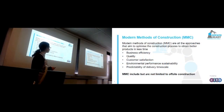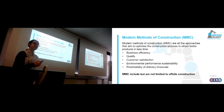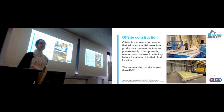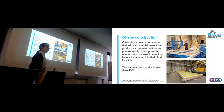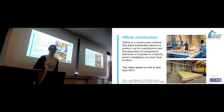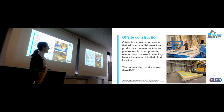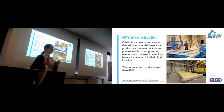Modern methods of construction are all about process improvements — their aim is to optimise the process. It's not a specific system or product; it doesn't matter what it is so long as it improves the construction process. Offsite construction is a bit more specific — offsite is really a way to achieve modern methods of construction, a way to achieve efficiency. Offsite construction is a method that adds substantial value to a product via the manufacturing and pre-assembly of components, elements or modules in a factory before they're installed in the final location. In other words, it's all about moving some of the work from site to the factory where you have better control over the processes.